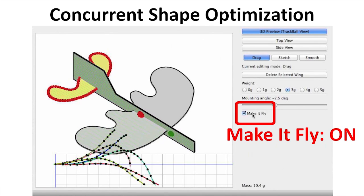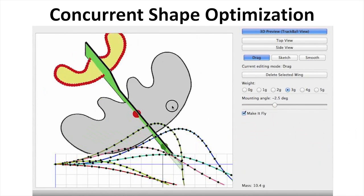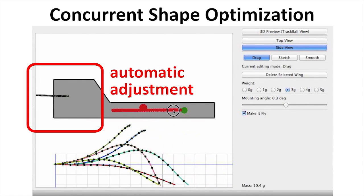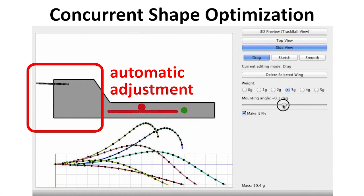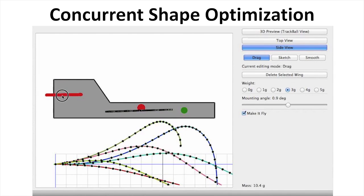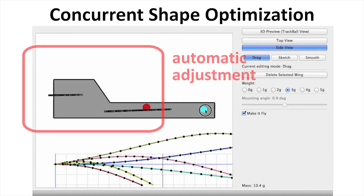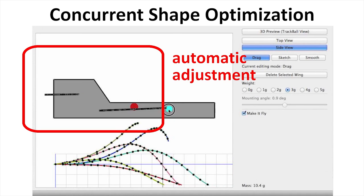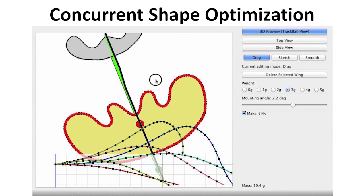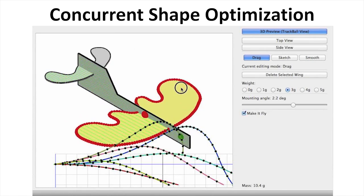To improve the flight trajectories, the user next enables Make-It-Fly mode, and our tool optimizes the design. Because this optimization runs at real-time rates, the user can interactively manipulate the plane and see the resulting optimized flight trajectories. This interface allows the user to continuously explore the design space of flyable planes without requiring labor-intensive design test iterations.